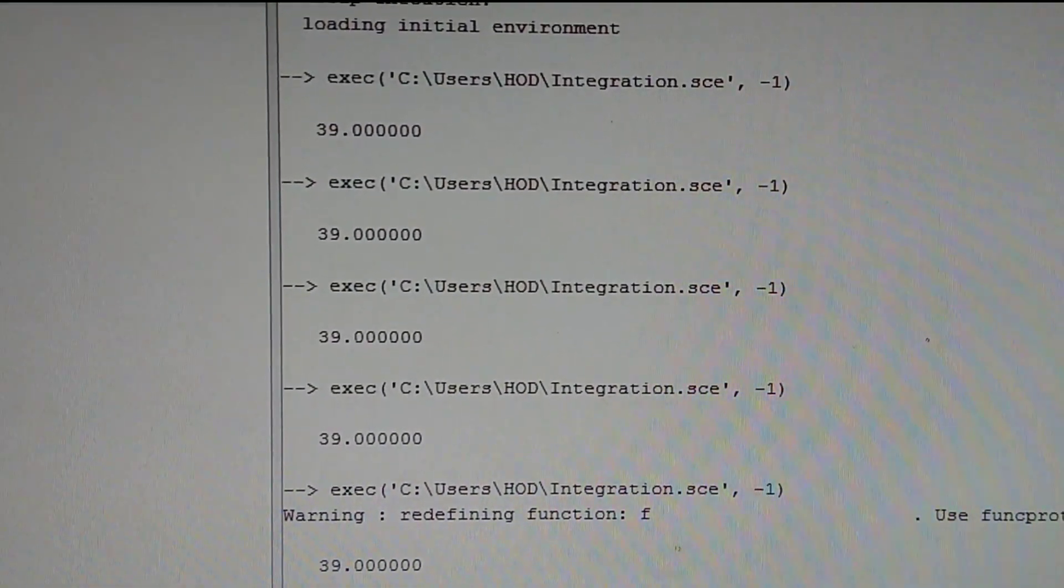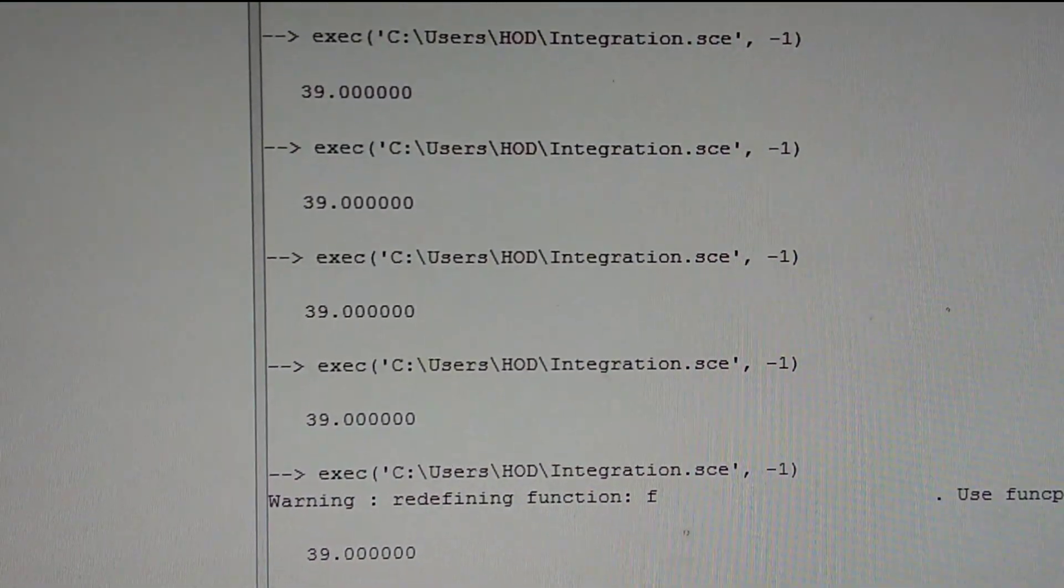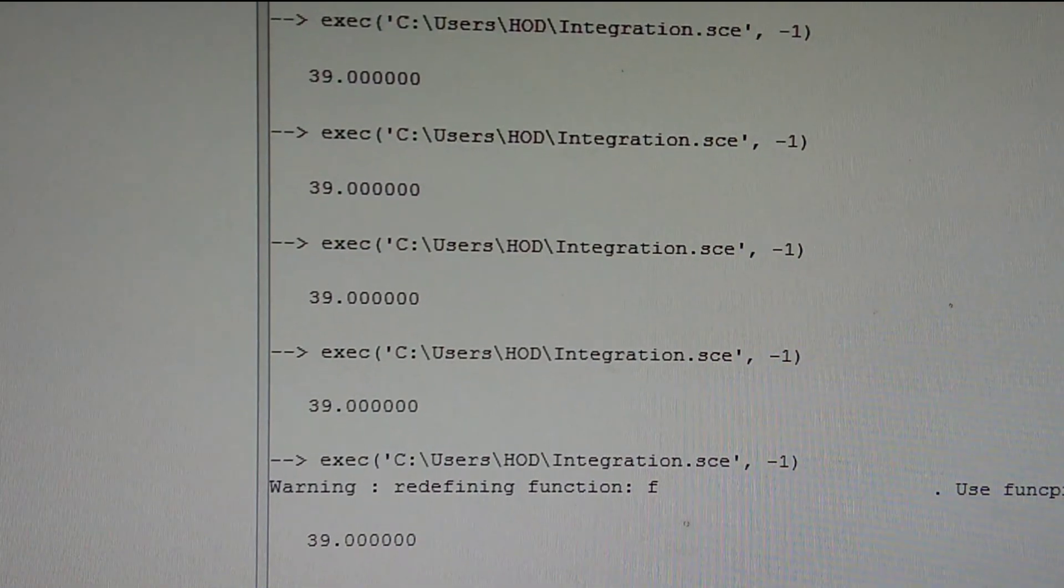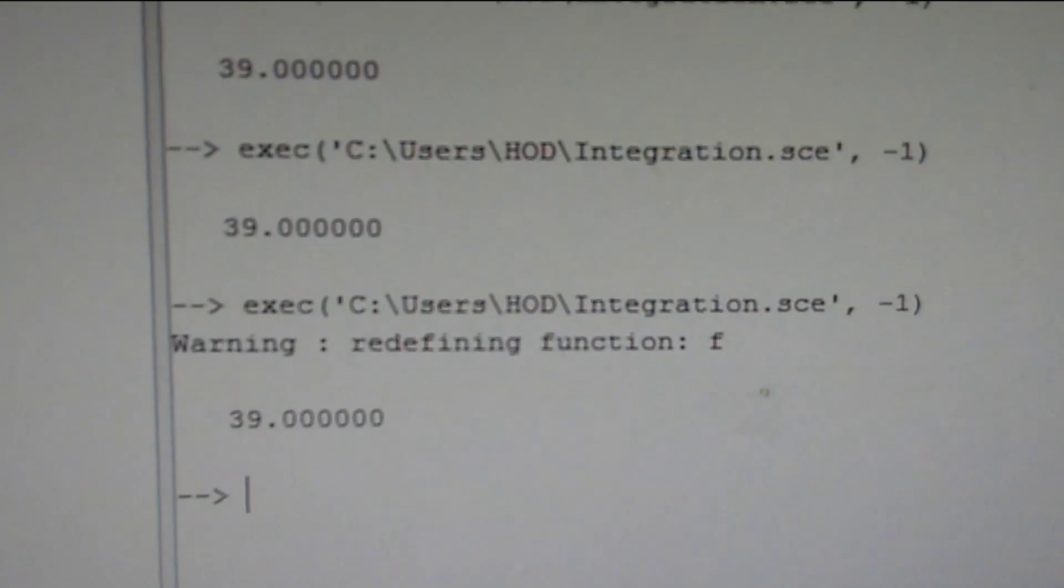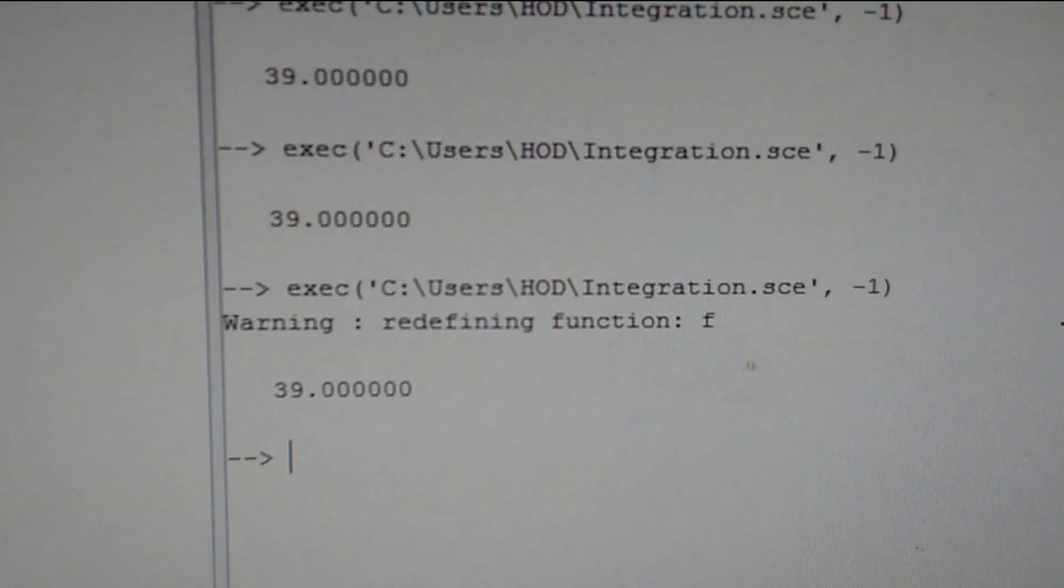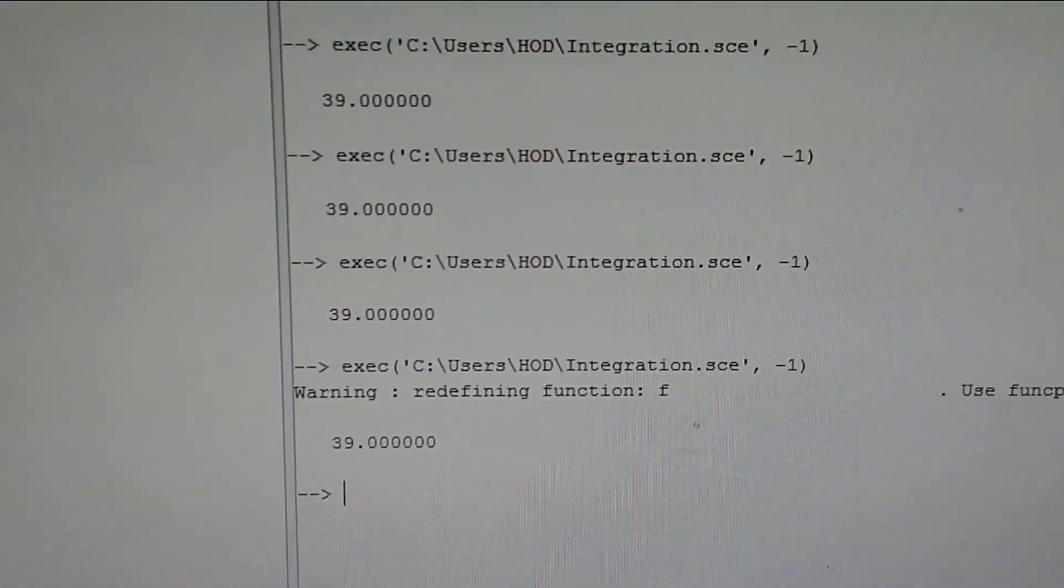Let us see the Scilab console. In Scilab console, the answer you will get, I have got 39. You see, I have got the answer 39, which I have calculated.